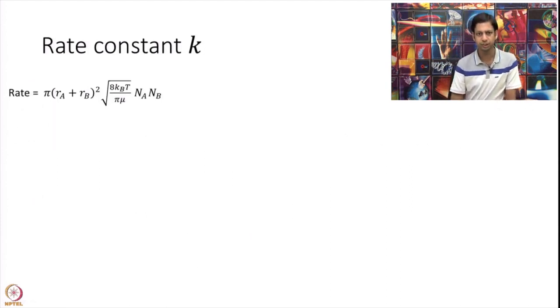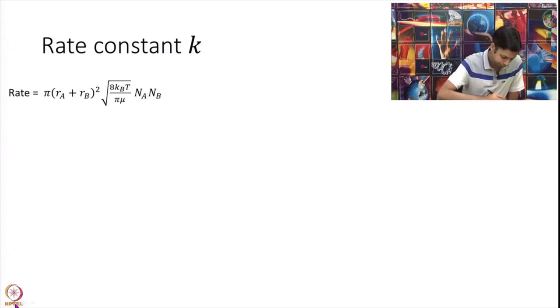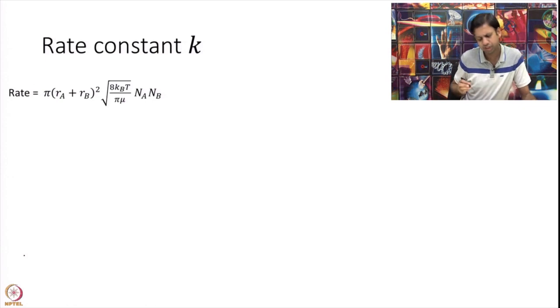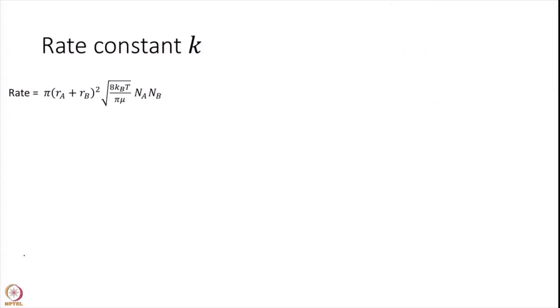So first, let us simplify and calculate the rate constant. What is the difference between rate and rate constant? Again, let us write the reaction clearly: A plus B going to products, and remember we are assuming this is elementary. This is one step, nothing more is happening. A is coming and B is coming and they are colliding and giving these products.